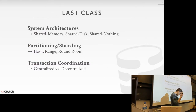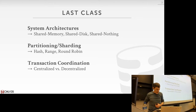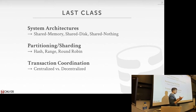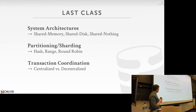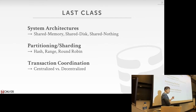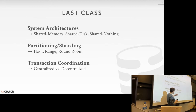Last class we talked about an introduction to distributed databases. The three main things we focused on were system architecture — shared memory, shared disk, and shared nothing. Most distributed databases are either shared disk or shared nothing. Shared nothing is traditionally more popular, but shared disk is becoming more prevalent in cloud architectures. We also talked about partitioning or sharding — hash partitioning, range partitioning, round robin — to break a database into disjoint subsets assigned to different nodes. Then we briefly discussed transaction coordination: centralized versus decentralized approaches.